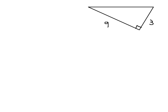In this video, we're going to attempt to solve the triangle drawn on the right. We know two of the sides are 9 and 3, but we need to find all the other missing sides and angles.